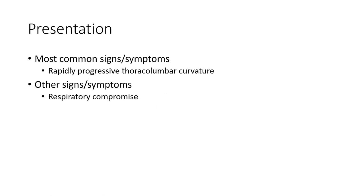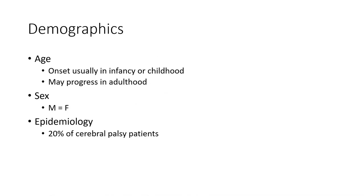Most common signs and symptoms are totally progressive thoracolumbar curvature. Other signs and symptoms are respiratory compromise. Demographic age of onset is usually in infancy or childhood.